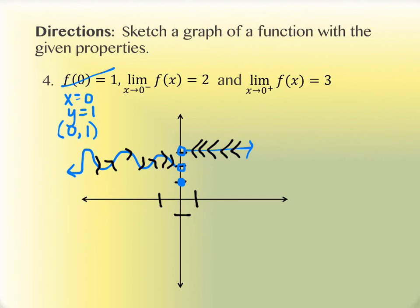The closed dot at (0, 1) tells you what the function actually equals at that location. The key insight is that you can have limits that approach values different from the actual function value. The function value is something else entirely — it doesn't have to be a point that the limit approaches. That kind of discontinuity can happen, and this example illustrates it well.